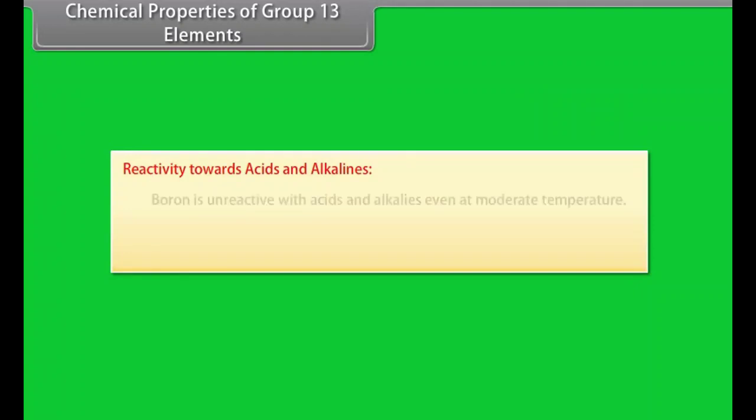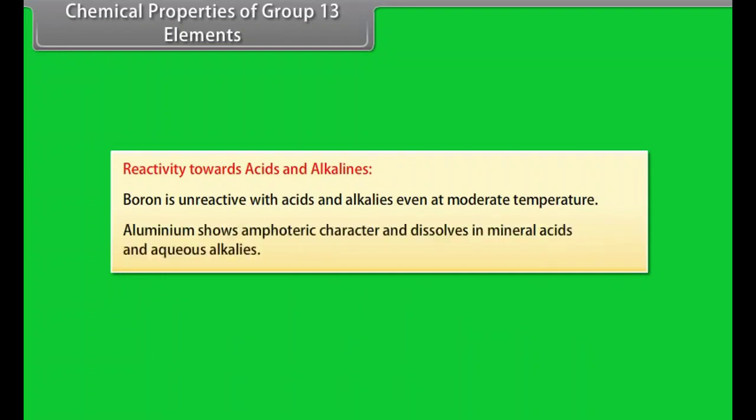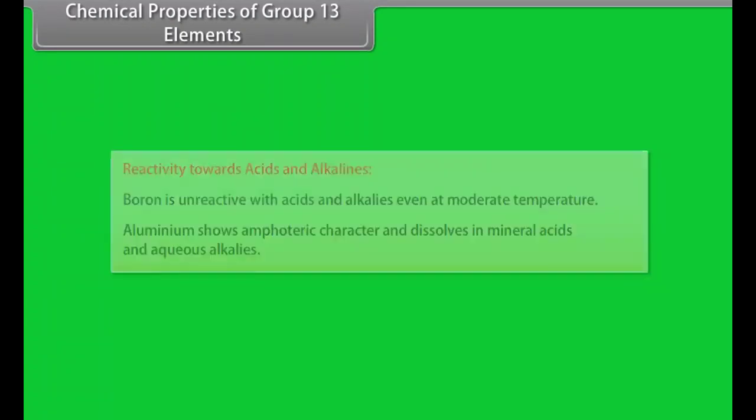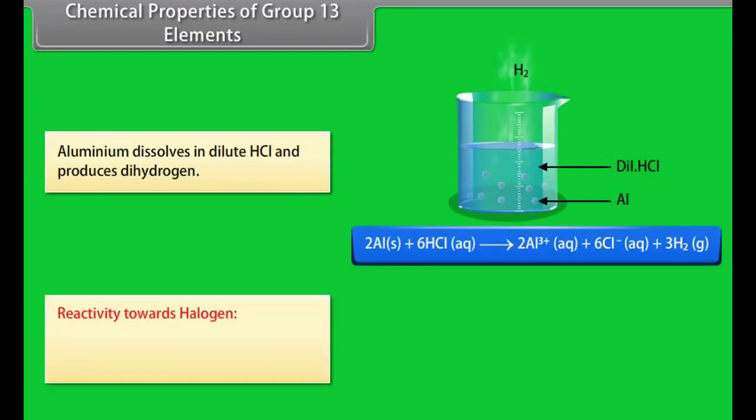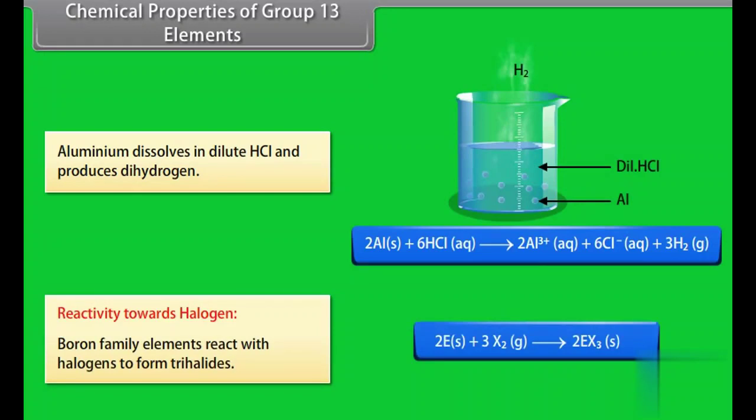Reactivity towards acids and alkalines. Boron is unreactive with acids and alkalies even at moderate temperature. Aluminium shows amphoteric character and dissolves in mineral acids and aqueous alkalies. Aluminium dissolves in dilute HCl and produces dihydrogen. Reactivity towards halogen. Boron family elements react with halogens to form trihalides.